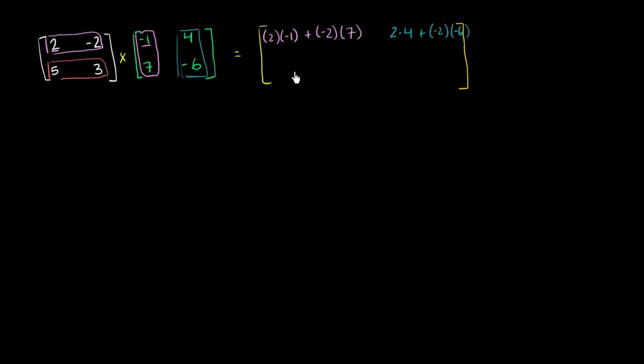So we're now in the second row. So we're going to use the second row of this first matrix. And for this entry, second row, first column. Second row, first column. So 5 times negative 1 plus 3 times 7.